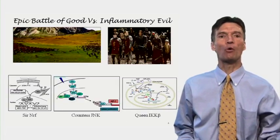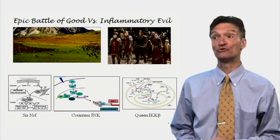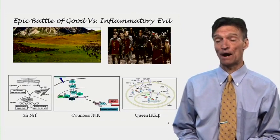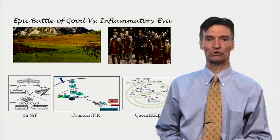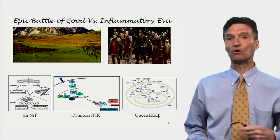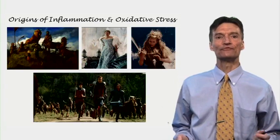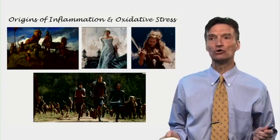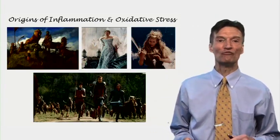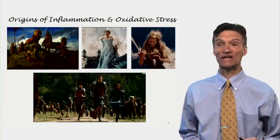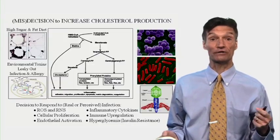But we saw that not all was well in Narnia — there was going to be an epic battle of good versus inflammatory evil. Countess Junk and Queen IκBa sought to sow discord and disharmony, while Sir Nrf2 promulgated equality and abundance and justice. As the good people of Narnia understood the origins of evil inflammation and oxidative stress, they were able to vanquish forever Queen Jadis and Countess Junk. This is what we need to do in dealing with cardiovascular disease.